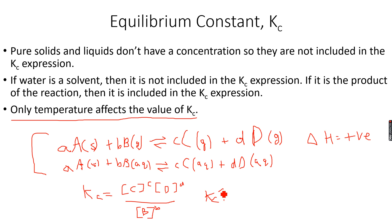If the forward reaction is exothermic — enthalpy change is negative — then decreasing temperature favours the exothermic side of the reaction. So if I decrease temperature, more of C and D will form. The numerator in the Kc expression will be larger, and hence Kc will be larger, telling us the equilibrium lies more to the right.